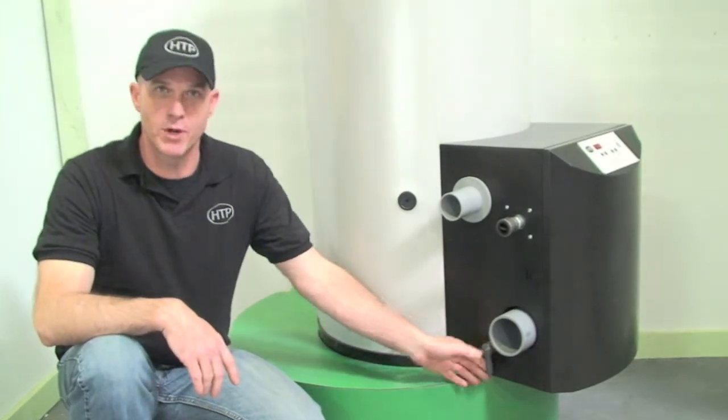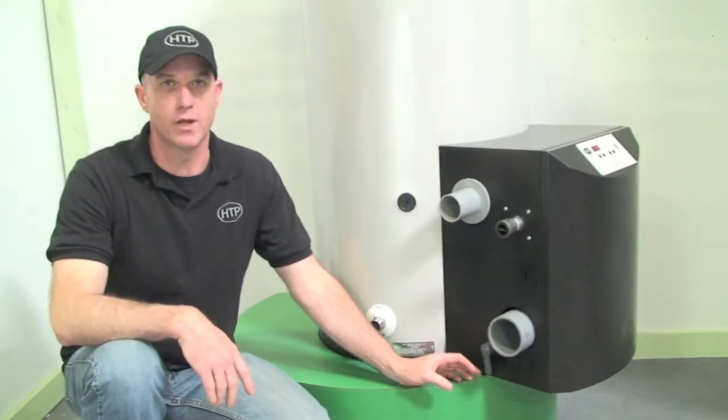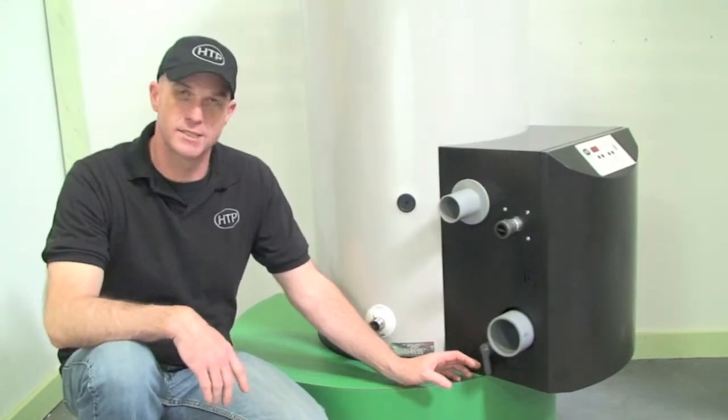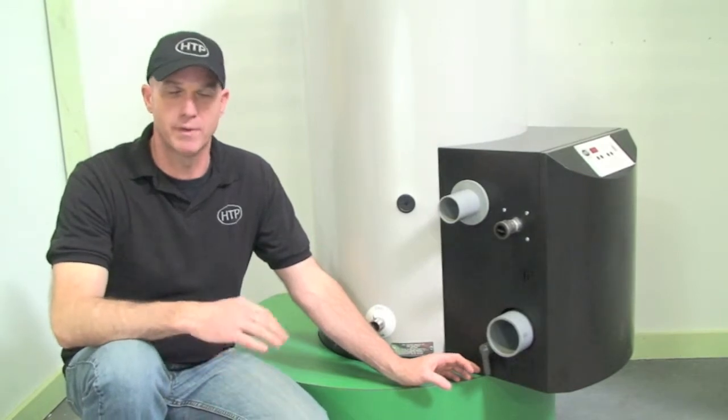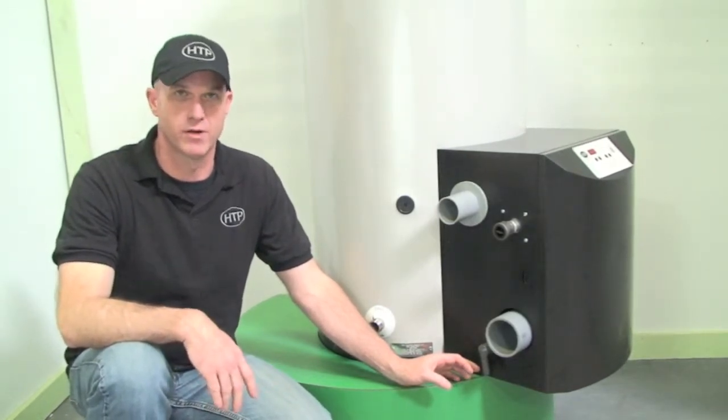In some areas they may have you drain it into a common drain, and in those cases you're going to need a condensate neutralizer. That takes the acidity out of the water, makes it neutral, and makes it safe to dump into drains. It will not rot the waste pipe and cause any further damage.